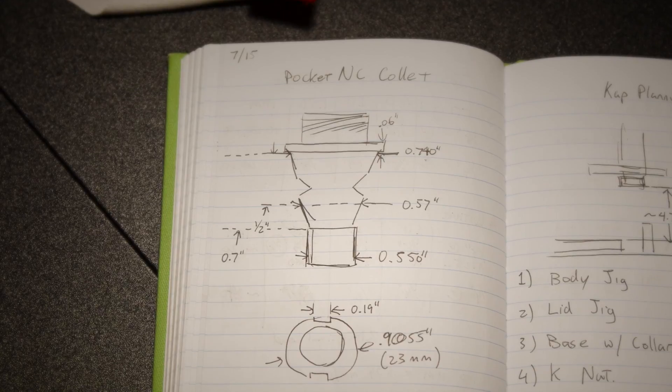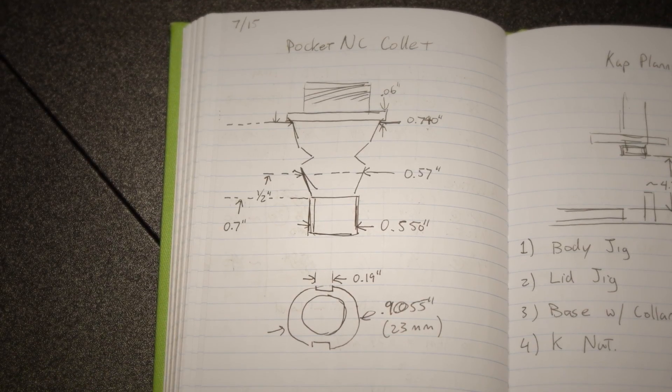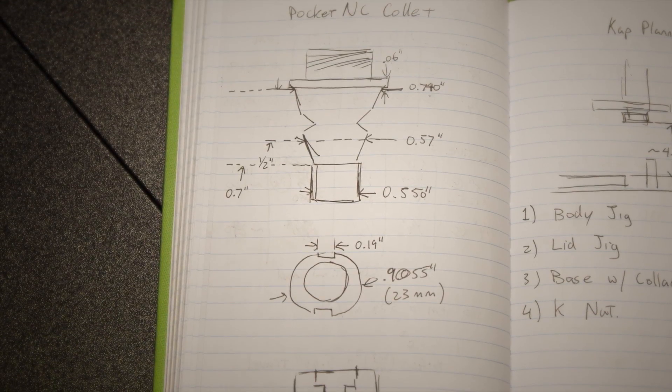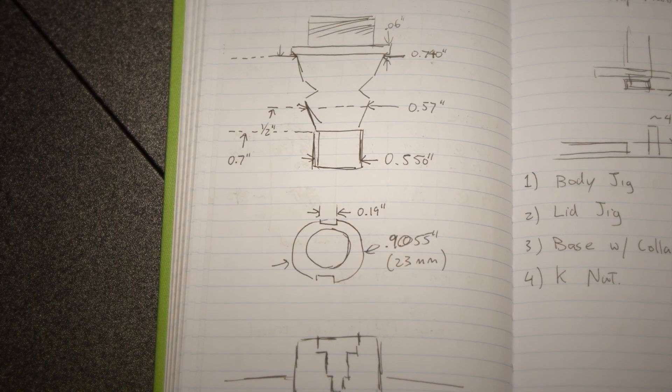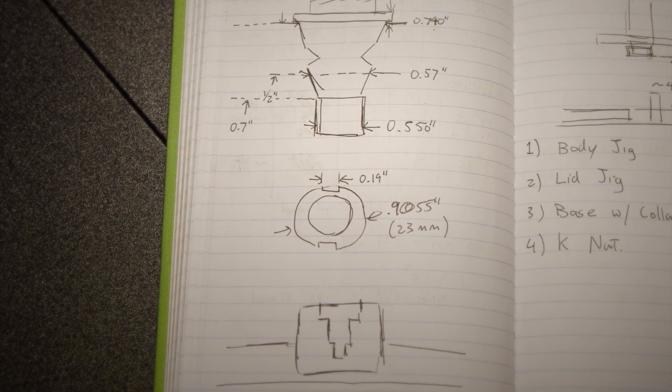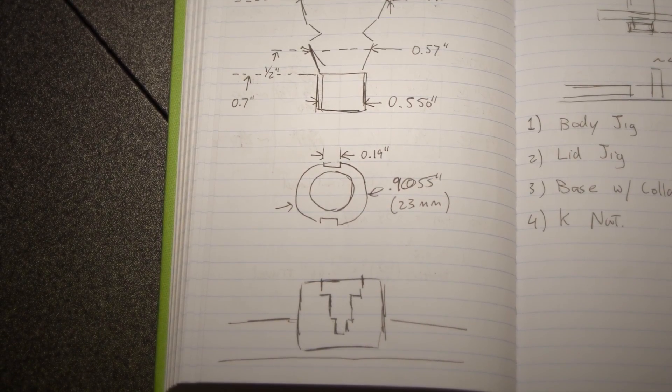The design is a cylindrical body that conforms to the profile of the Pocket NC's tool holder with pins that match the notches in the tool holder to prevent rotation. The entire part will be embedded in a wooden base that can be clamped or bolted to a tabletop.